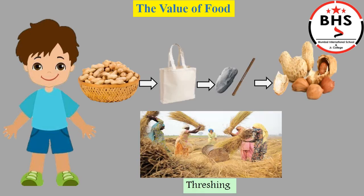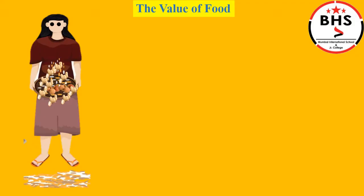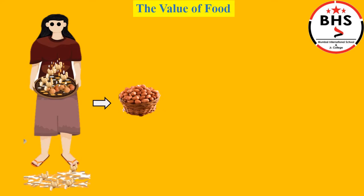Mother asked Varsha to take a tray, put the groundnuts in the tray, hold it with both hands, and toss them quickly and lightly in the air. The empty shells fall off and the nuts are left behind. Mother explains that the shells are light in weight, so they get blown away by the air and fall off. The nuts are heavier and so they are left behind.